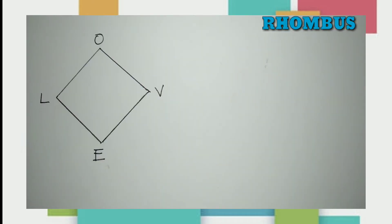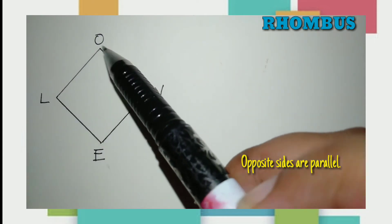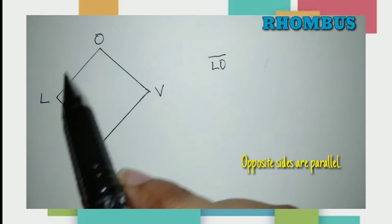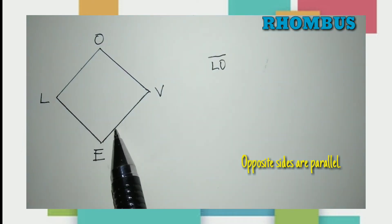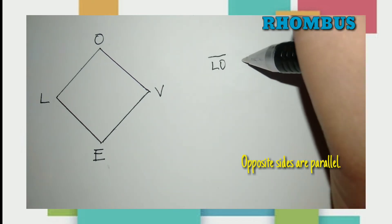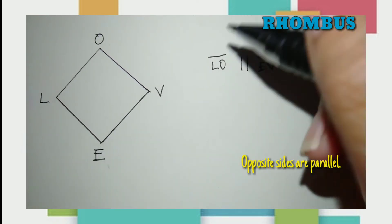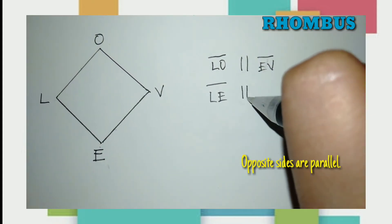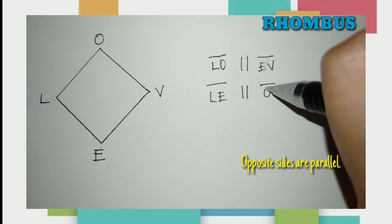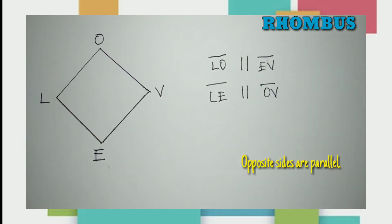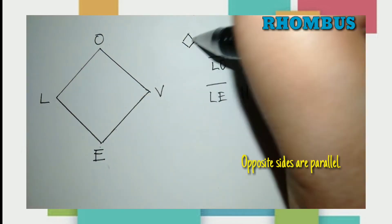Next, we have a rhombus as a type of quadrilateral. The first property is opposite sides are parallel. We know what opposite means — the sides facing each other. For example, side LO is parallel to side EV. The other pair: side LE is parallel to side OV. This quadrilateral is a rhombus.